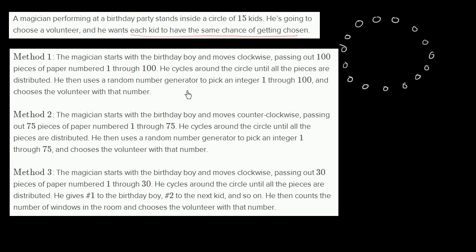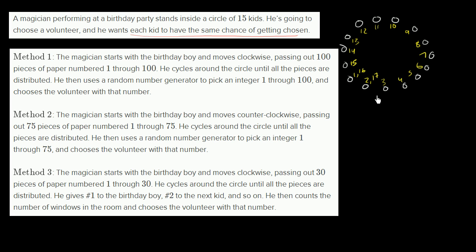He's going to hand out pieces of paper, giving 1 through 15 on the first pass. Then this first person gets pieces of paper 1 and 16, the next person gets 2 and 17, and you keep going round and round until all 100 pieces of paper are distributed.